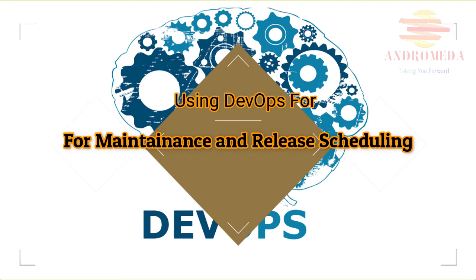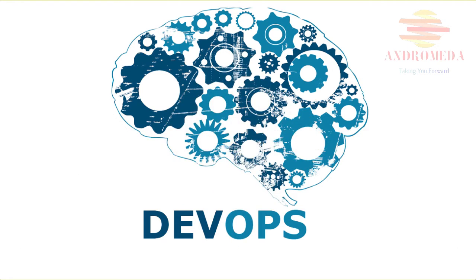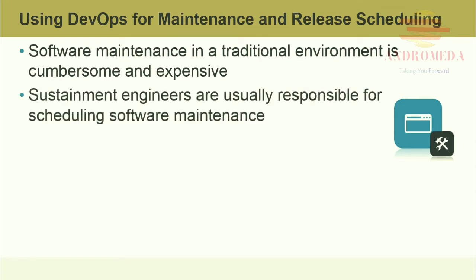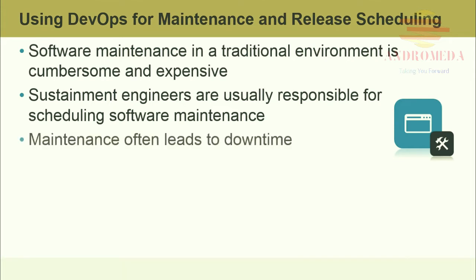Software maintenance in a traditional environment is cumbersome and expensive. Some organizations spend more money on software maintenance than on software development. Sustainment engineers are usually responsible for scheduling software maintenance, usually handled within maintenance windows — very narrow spans of time where an application may be taken offline. Maintenance often leads to downtime, depending on what's being maintained.